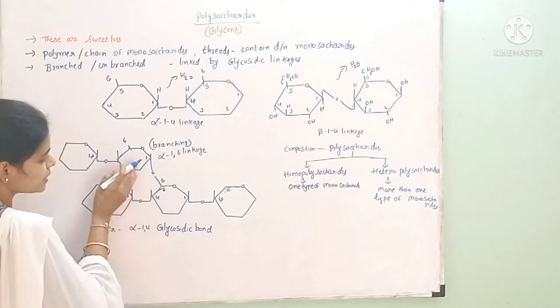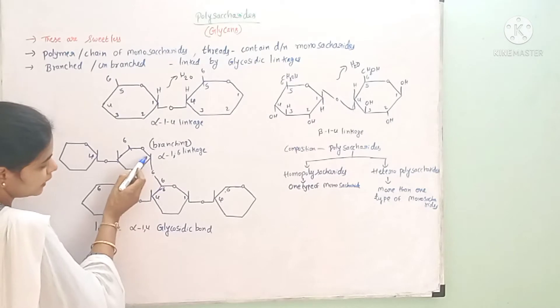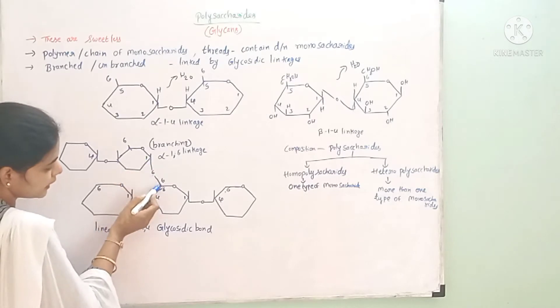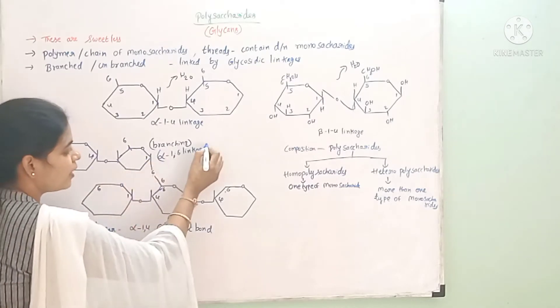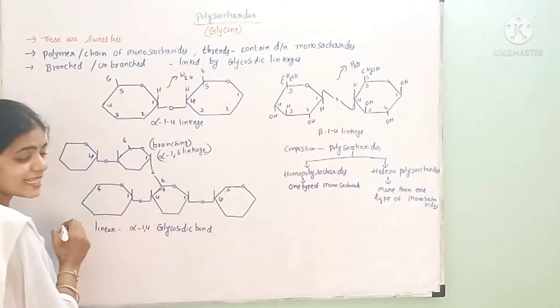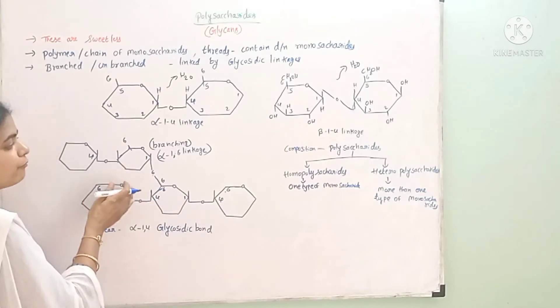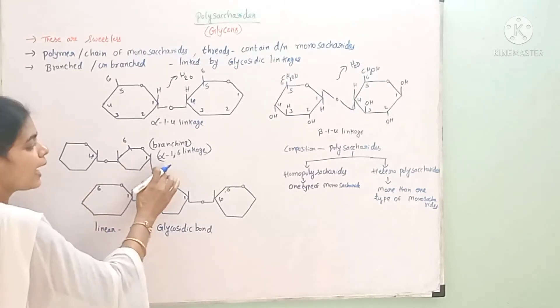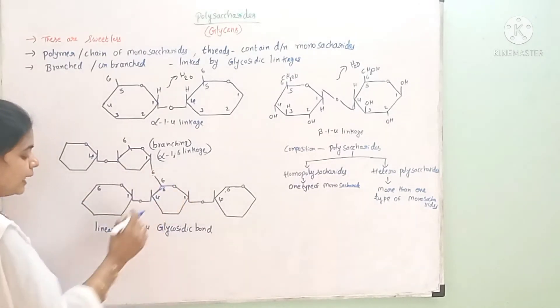There is a glycosidic linkage here, from the first carbon to the sixth carbon. This creates a branch. This is called alpha 1,6 linkage.